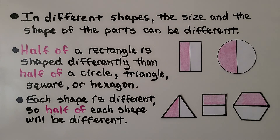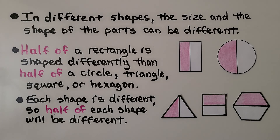In different shapes, the size and the shape of the parts can be different. Half of a rectangle is shaped differently than half of a circle, triangle, square, or hexagon. Each shape is different, so half of each shape will be different.